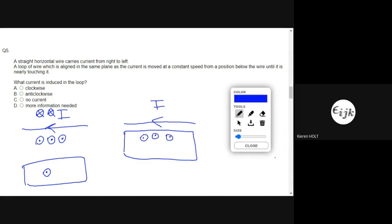And that means that the magnetic field as the coil is brought up towards the wire, the magnetic field is increasing inside the coil and this means that the flux inside the coil is increasing.